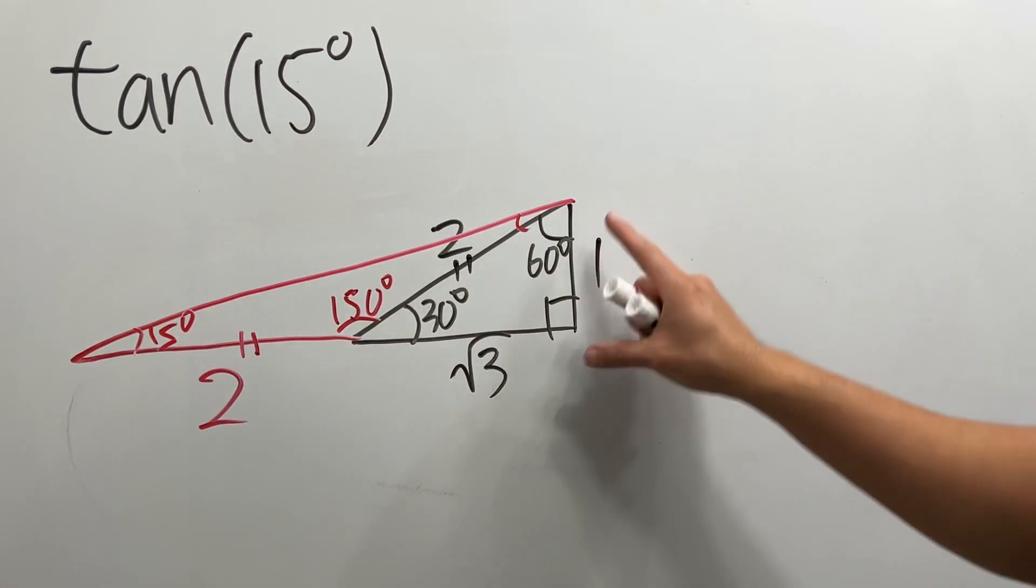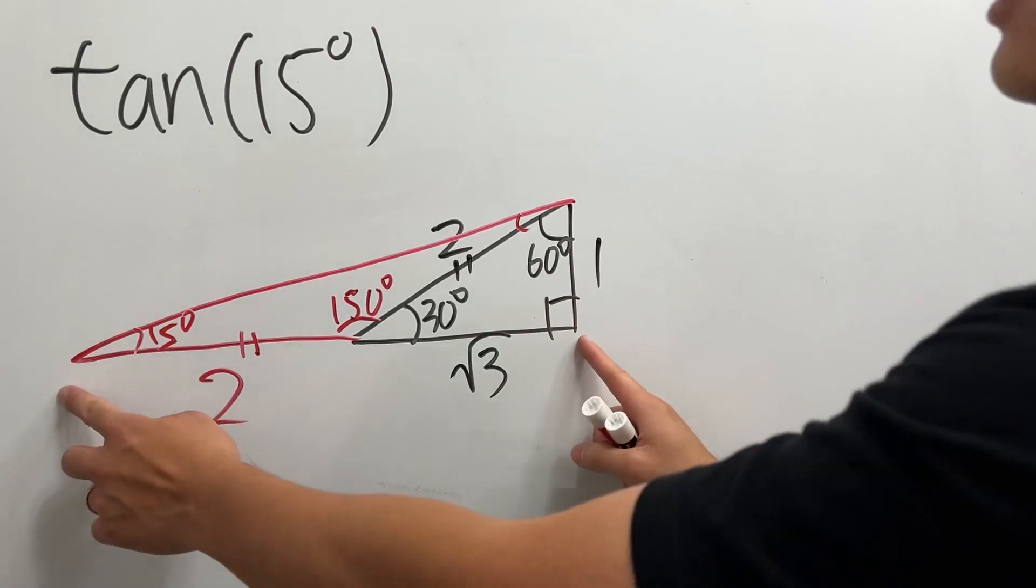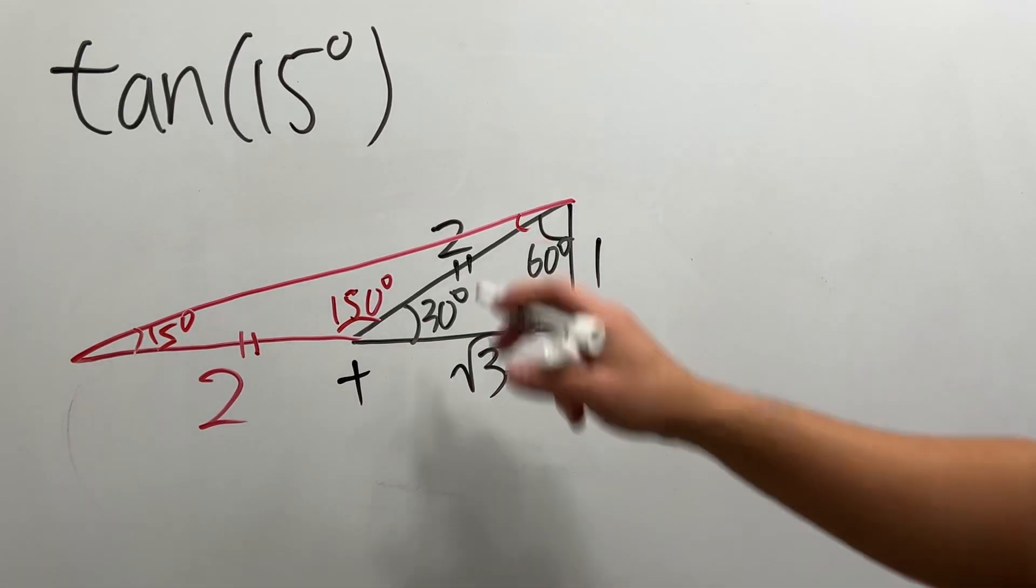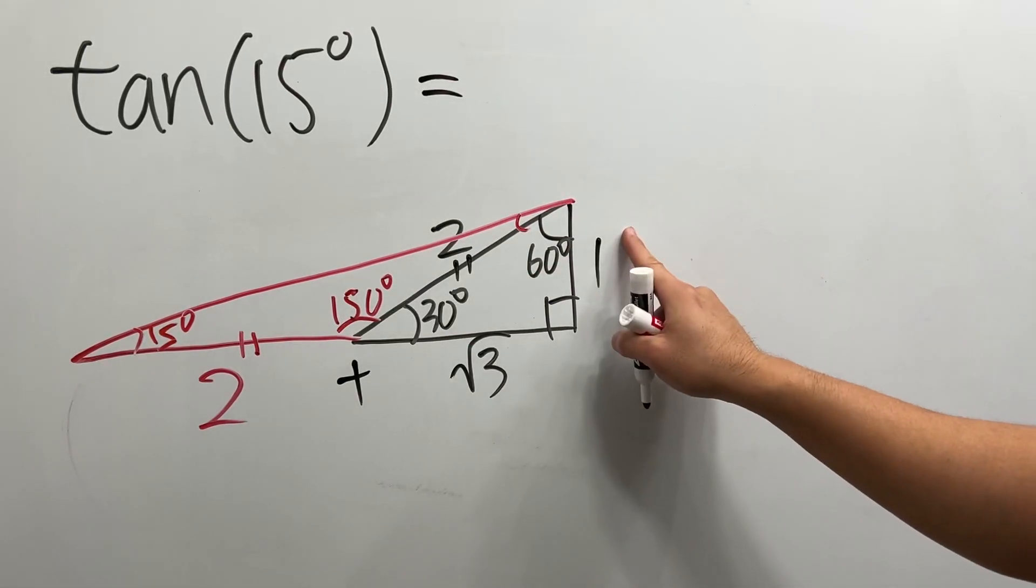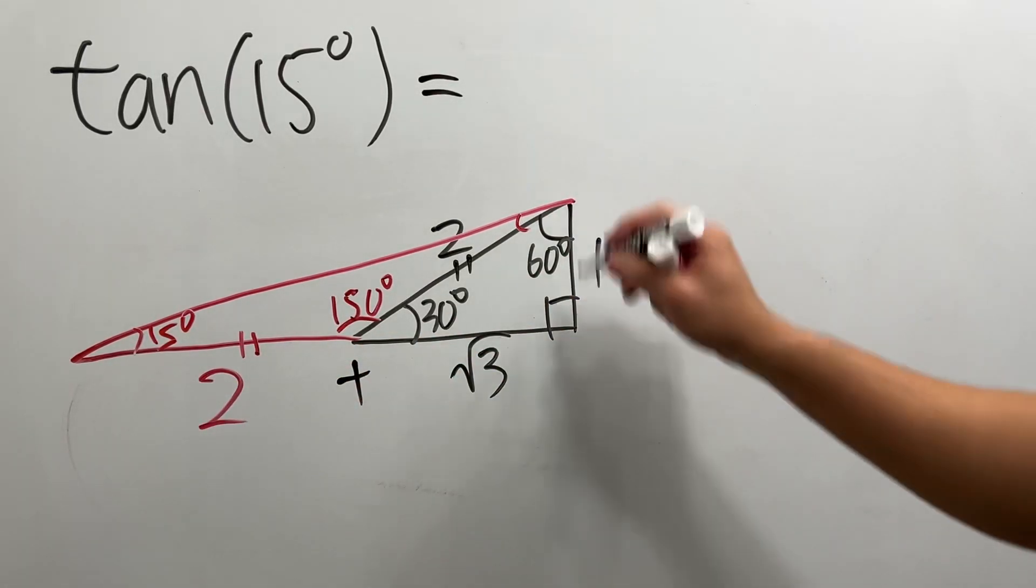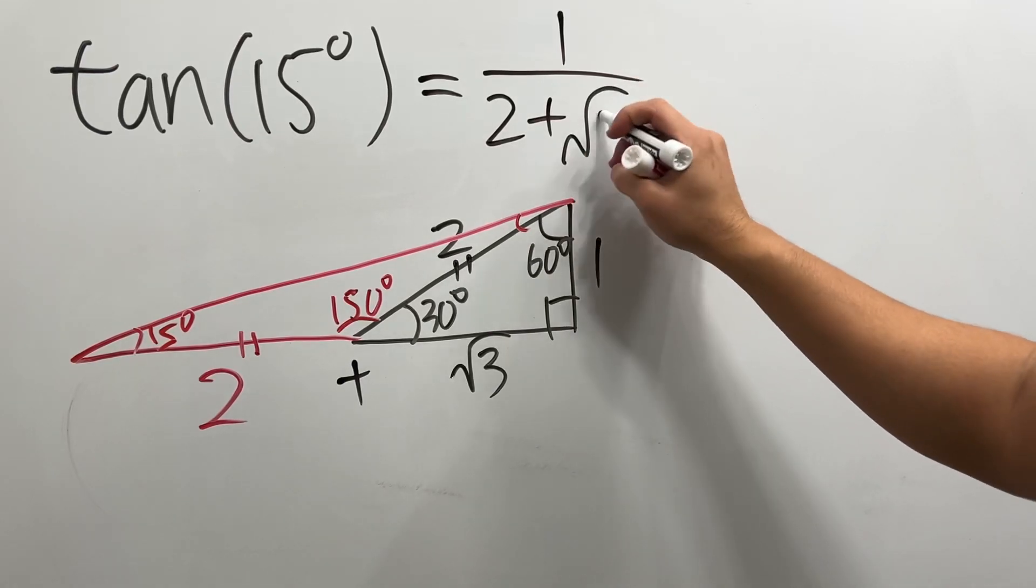And there you have it. Here is 1. This right here is 2 plus square root of 3, so tangent is just opposite over adjacent, so it's 1 over 2 plus square root of 3.